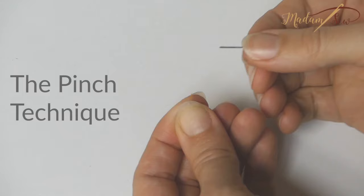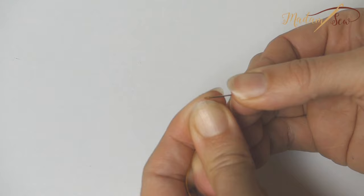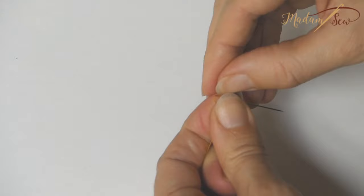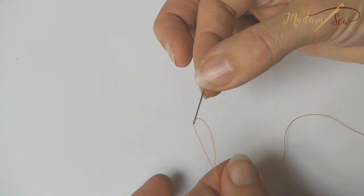Instead of guiding the thread to the needle like most people do, it's better to bring the needle to the thread and pinch the top of the thread between your thumb and index finger. You can hardly see the thread and you just push the needle eye over the thread between your fingers.